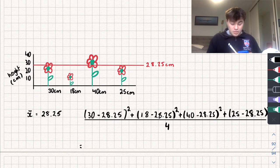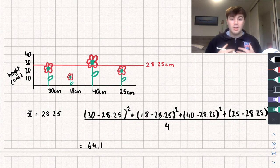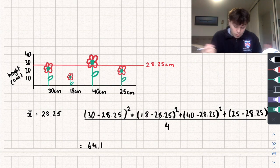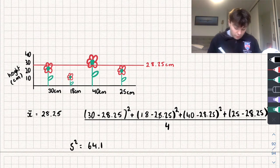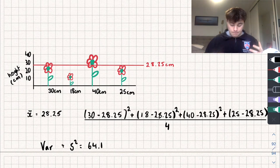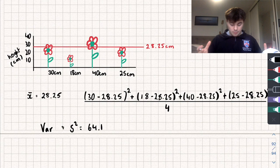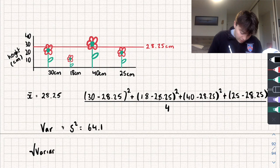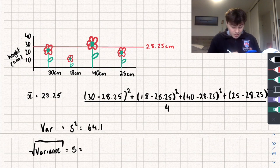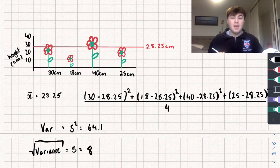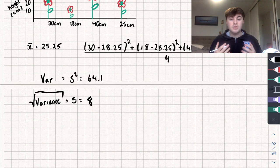If we work that out we get a variance of 64.1 to one decimal place. For A-level maths you could write that as s-squared, which represents our variance. So what is our standard deviation? Well if we take the square root of the variance — written as s — that equals the square root of 64.1, which gives us approximately 8. That would be our standard deviation.